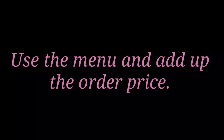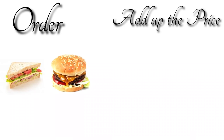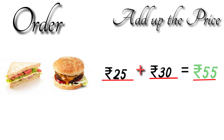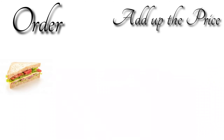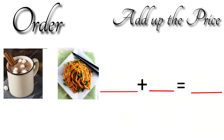So let's see how to do it. Your first order is sandwich and burger. Use the menu card: the sandwich is rupees 25 plus the burger is rupees 30, so your total is rupees 55. You have to pay rupees 55 for your first order. I have done one for you, and you will do the rest by following me.